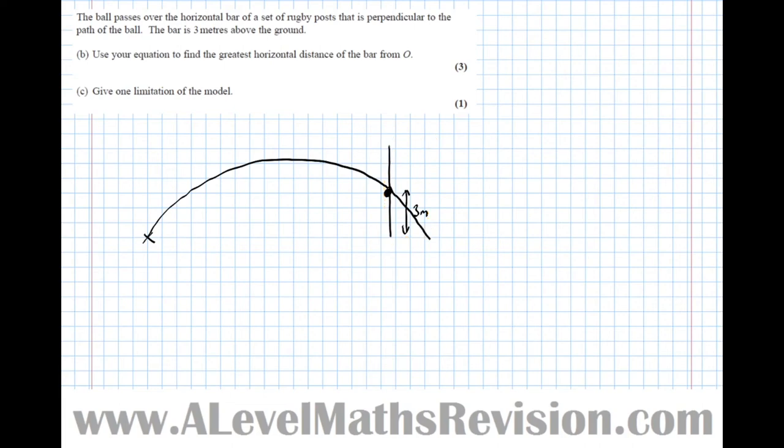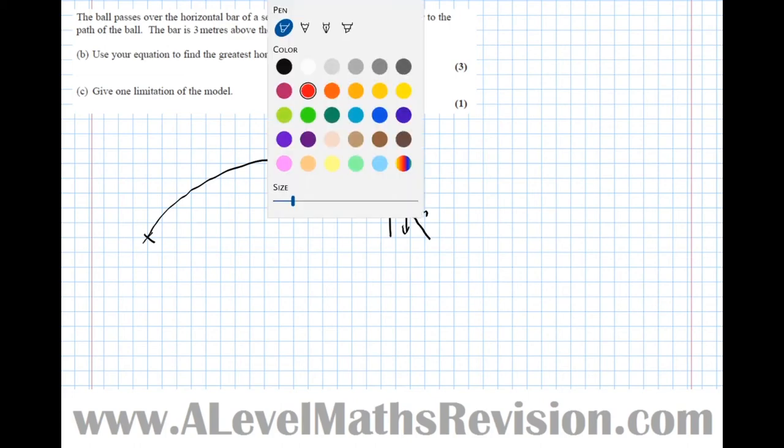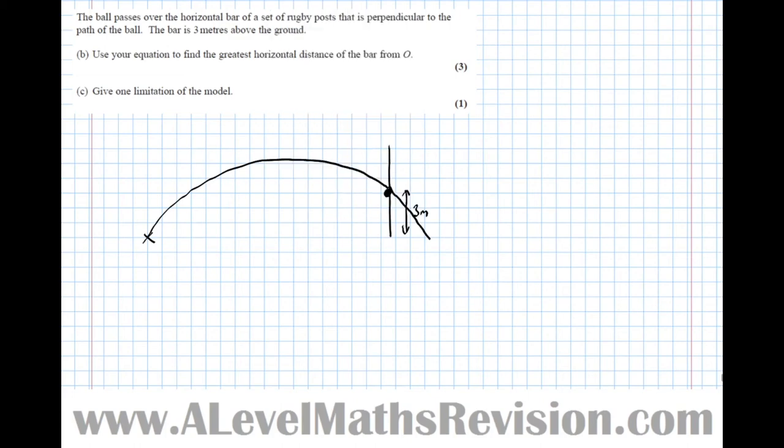So we see that we want the distance from the origin when the ball is just at 3 metres, when it just clears that. So the horizontal distance, which is what it asked for, is this distance here. So that's the distance we're being asked to find.